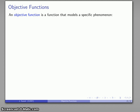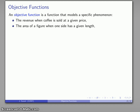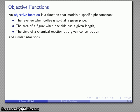The idea is that an objective function in general is any sort of function that models some specific phenomenon. Classic examples are the revenue when we sell coffee at a given price, or the area of a figure when we know one length of the figure, the yield of a chemical reaction at a given concentration, and so on.